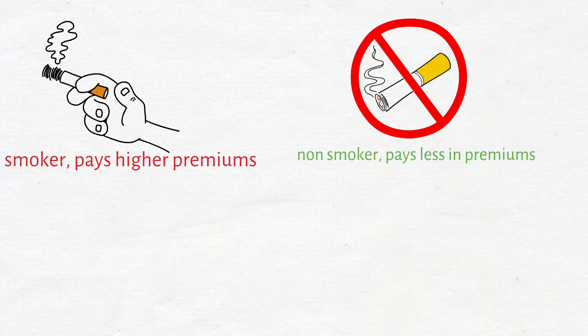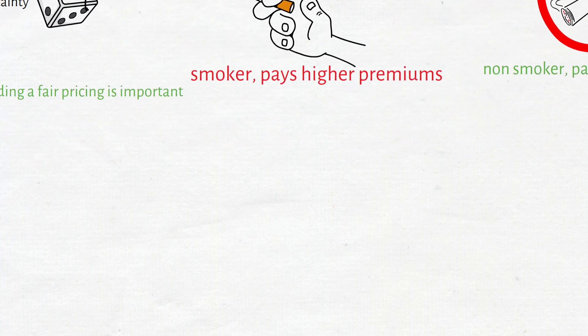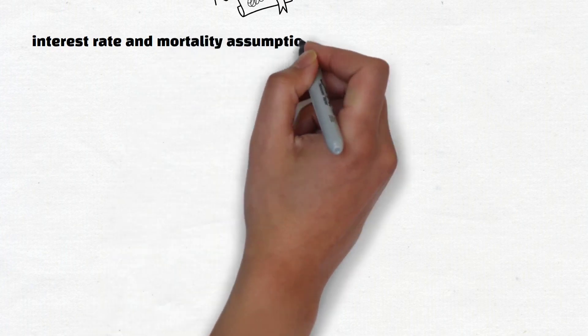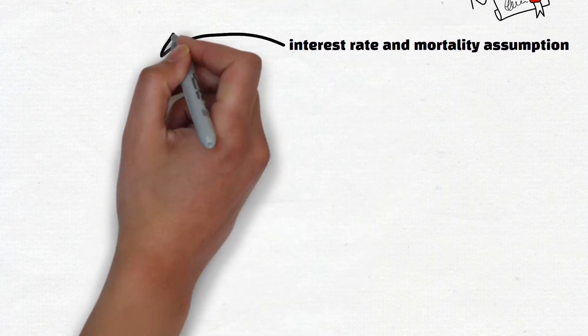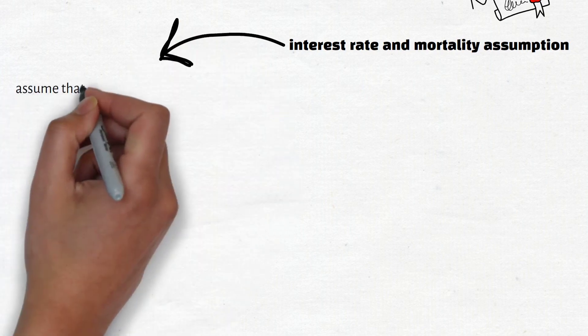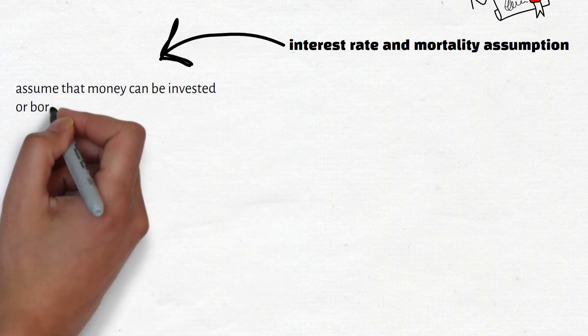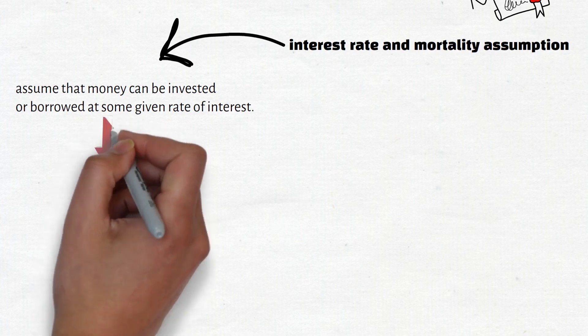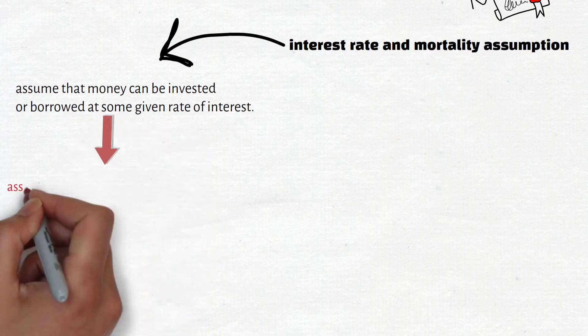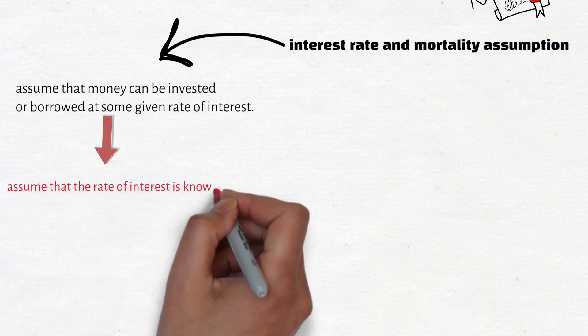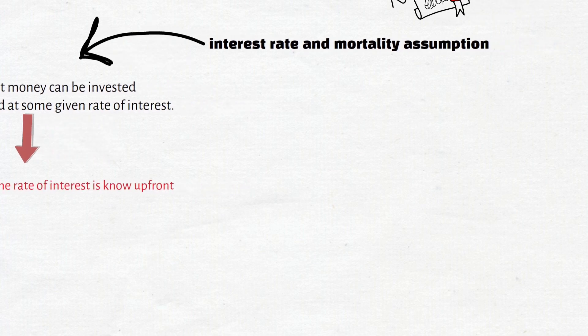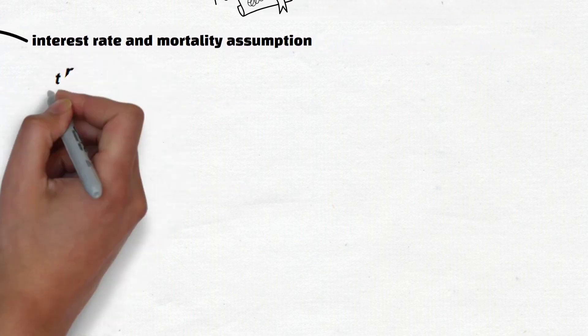That's how assumptions work. Earlier I mentioned time value of money and survival probabilities. That's where assumptions come in. The time value of money part comes in when we assume that money can be invested or borrowed at some given rate of interest. In this course we assume that the rate of interest is known up front. So it is kind of known what interest rate we will use when we price these policy contracts.